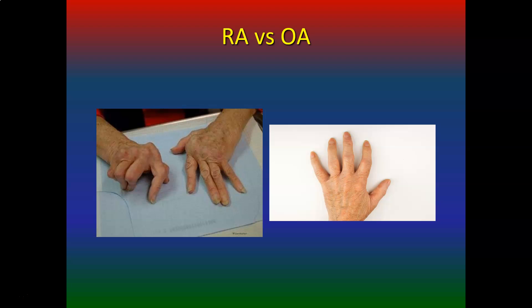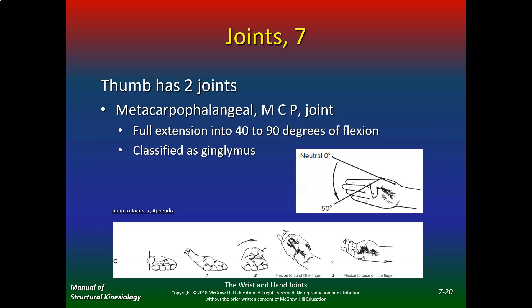If you have pain in both knees, both ankles, both hips, and your spine — everything hurts — that's more indicative of RA. But if you have pain only in the right knee, right ankle, or right hip, that's more indicative of OA.